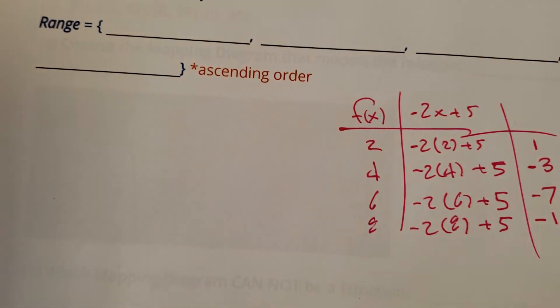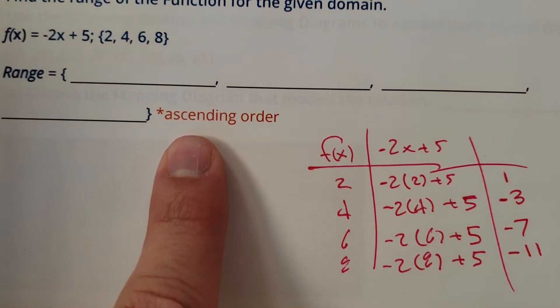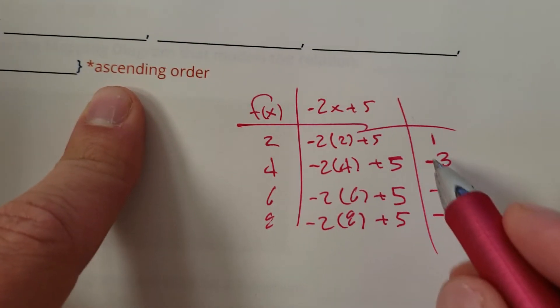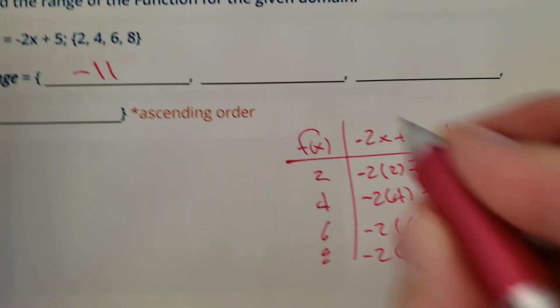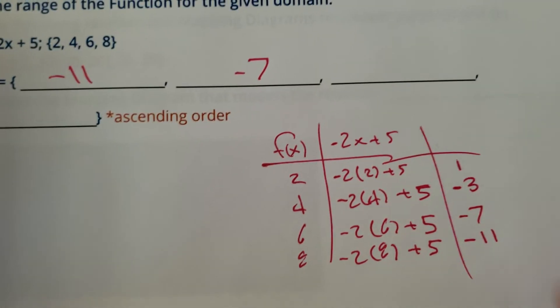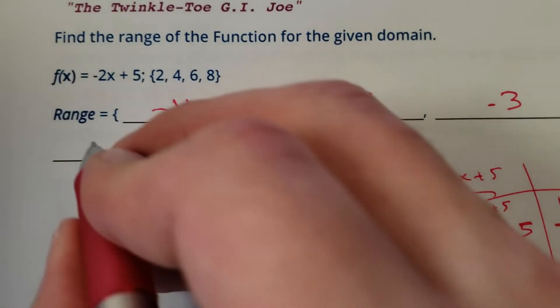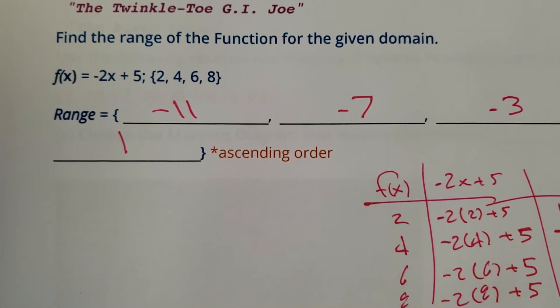so we got our four values. Now it says put it in ascending order, so that means we got to put the smallest number first or lowest. So think about temperature with negatives. So our coldest number is negative 11, then we have a negative 7, then we have a negative 3, and then we have a 1. Alright, cool. There we go.